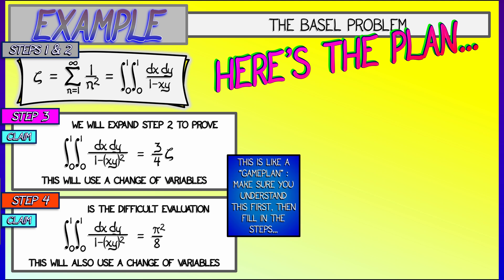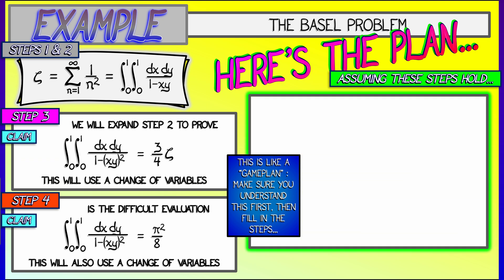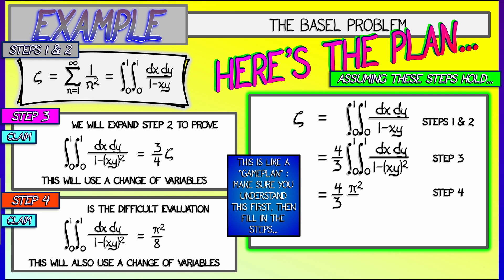Now, what do all these steps mean? Well, it's a game plan, and I want to go over the plan carefully first. Assuming these steps, what do we do? We get that zeta is the double integral of 1 over 1 minus xy, x and y going from 0 to 1. Step three says that this is 4 thirds times the modified double integral, where that denominator has quantity xy squared in it. Then, applying step four, doing that evaluation, we get that zeta is 4 thirds times pi squared over 8, and that is pi squared over 6. Goal! That's what we were looking for.